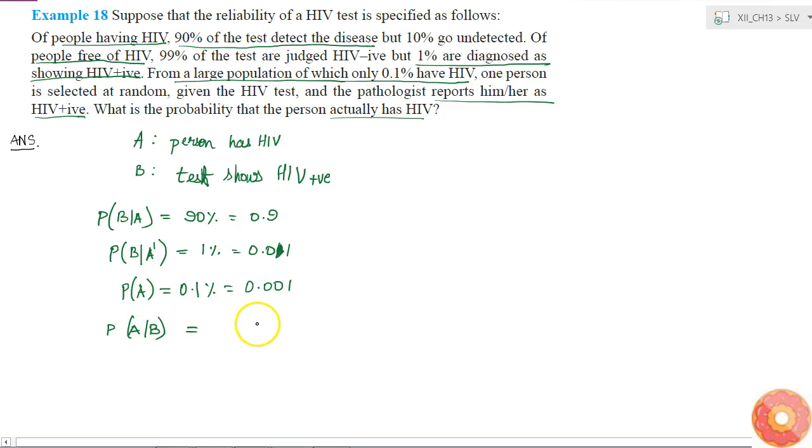Bayes theorem tells that this is equal to probability of B given A times probability of A, divided by probability of B given A times probability of A plus probability of B given A complement times probability of A complement.